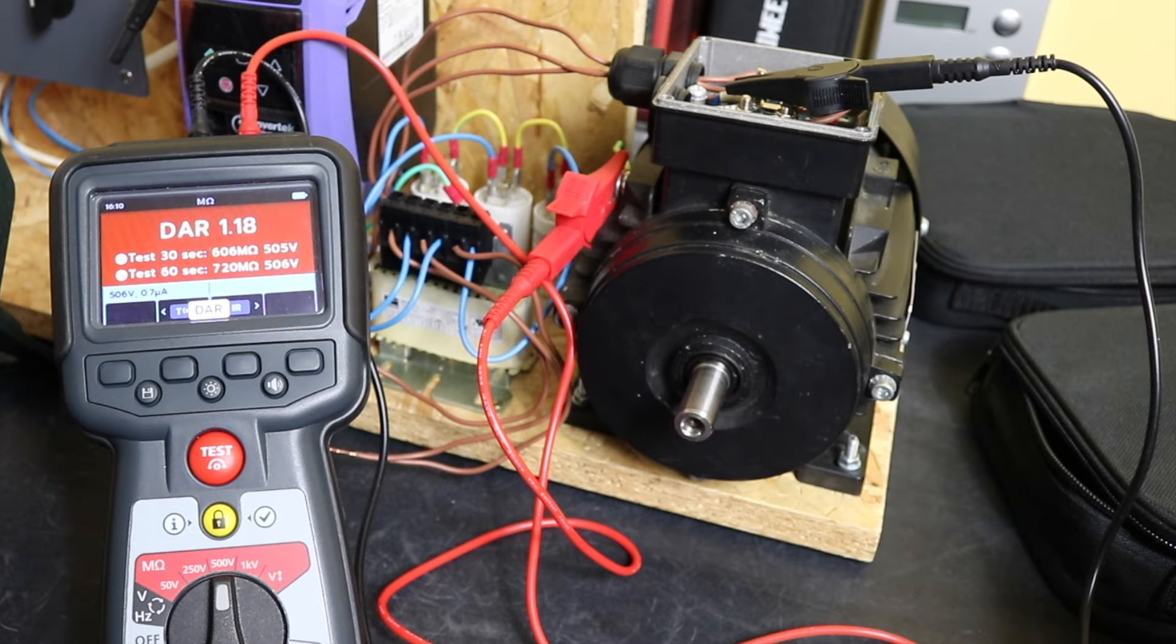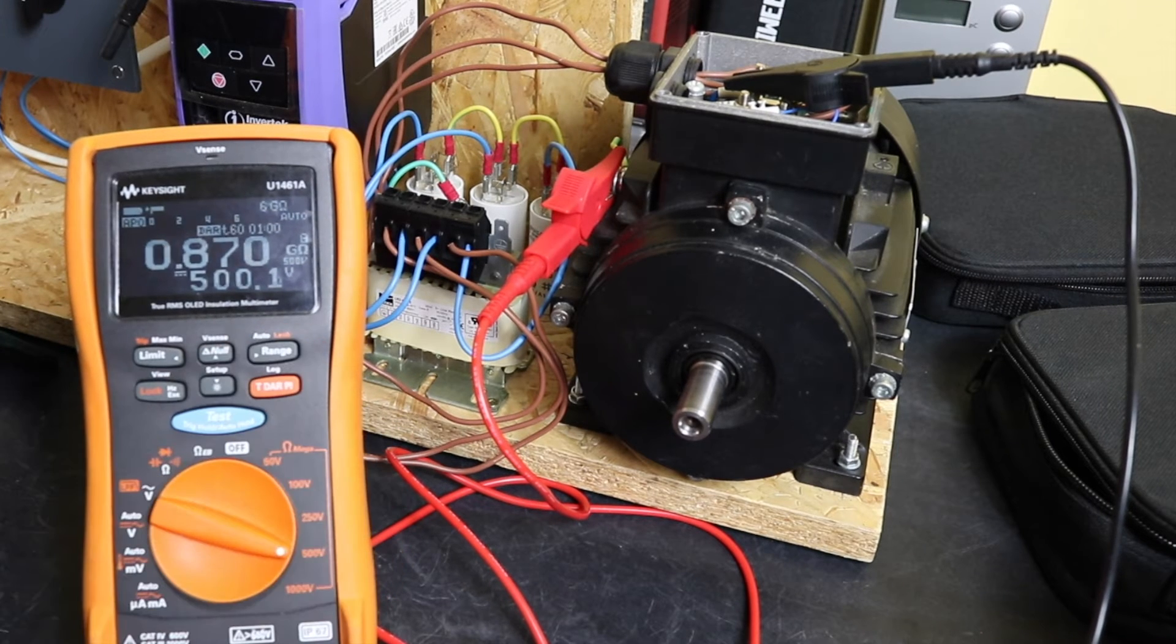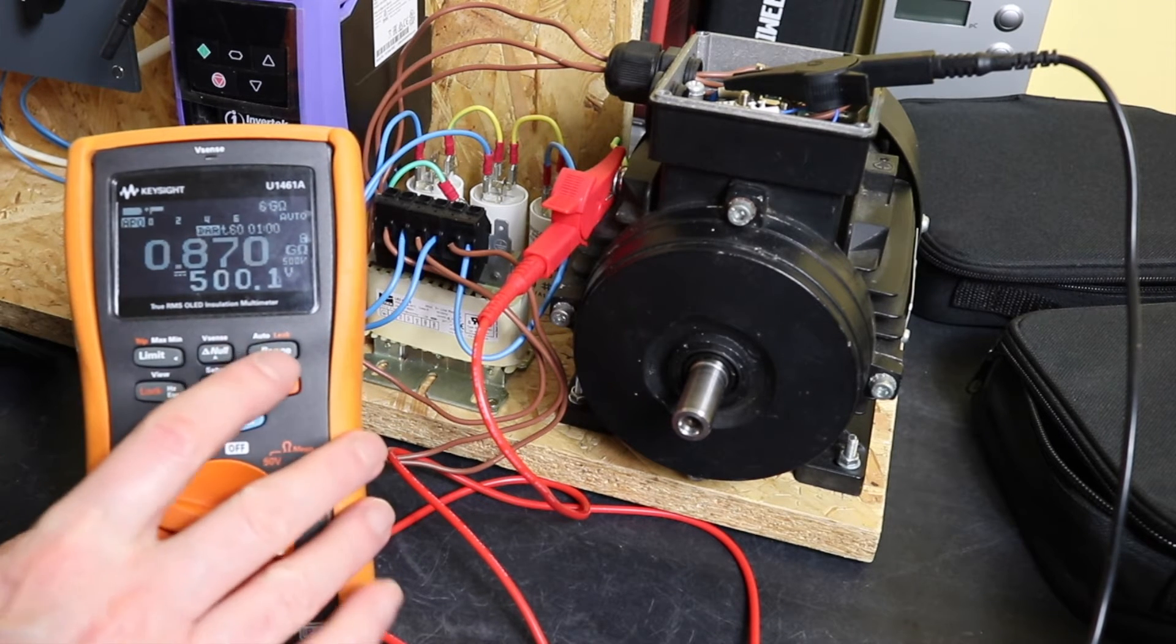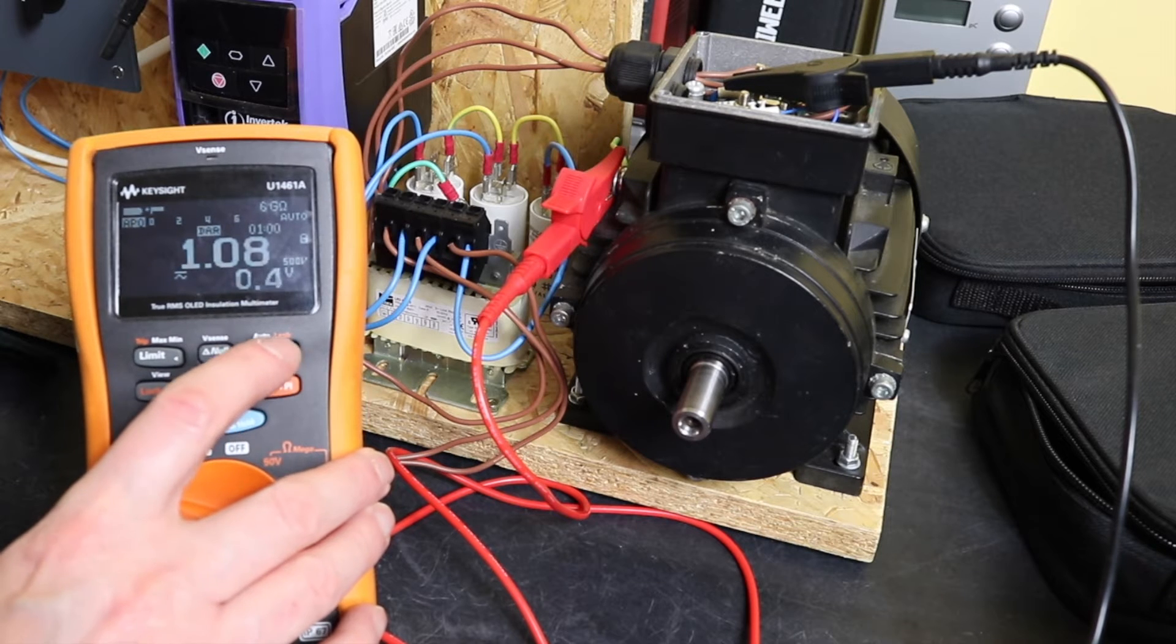Coming up to the end with the Keysight, you can see we're at 855 megaohms, so a little bit higher than the MTR105 but still substantially less than the UT505B. 1.08 for the actual DAR ratio, which is similar to both the instruments. There's our one minute reading and our 30 second ratio.